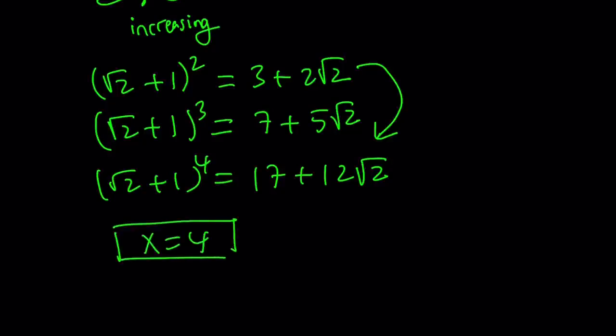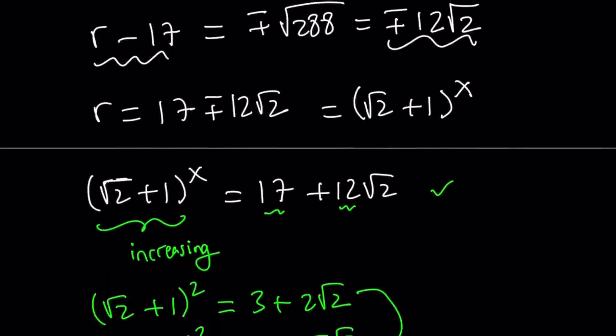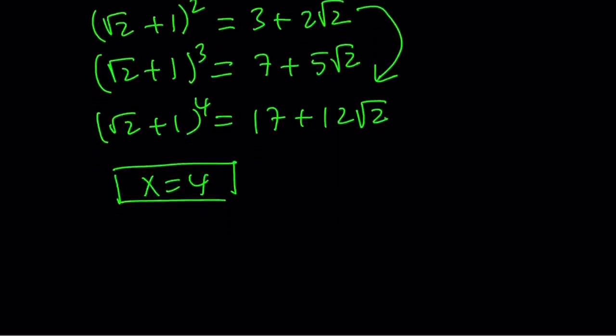But is that the only solution? And even though this function is increasing, our original function is a little different, right? Because it's also adding root 2 minus 1 to the x power and root 2 minus 1 to the power x is actually a decreasing function. So, you have the sum of an increasing and a decreasing function. So, what is the sum going to be like, right? But here's what we can take advantage of. We know x equals 4 is a solution.